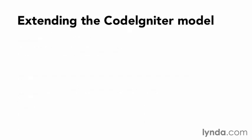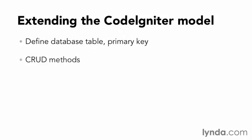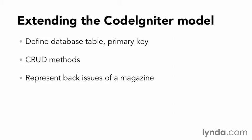In this chapter, I'm going to extend the CodeIgniter model to define the database table and primary key associated with it. Then I'll integrate CodeIgniter's database functionality with CRUD methods to allow models to save themselves, similar to traditional MVC. With this context, I'm going to create models that will allow me to represent back issues of a magazine.